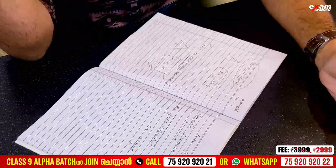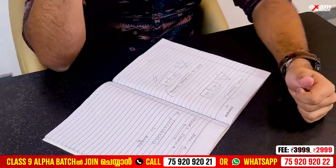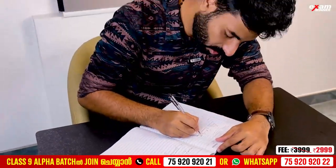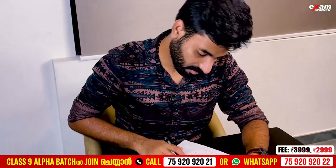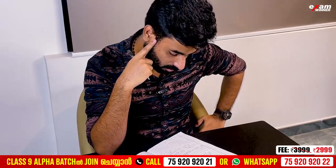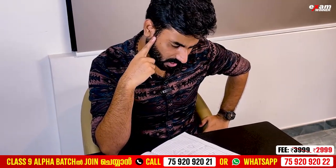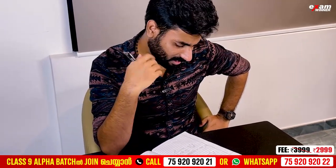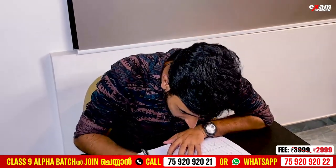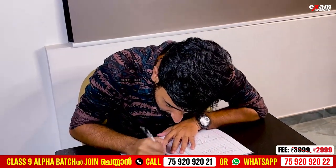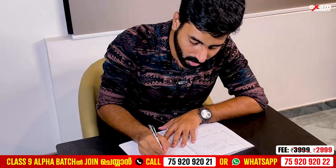Area of Triangle: A is equal to half B into H — base into height. The area of an equilateral triangle: A is equal to... Area of Triangle. Heron's Formula.